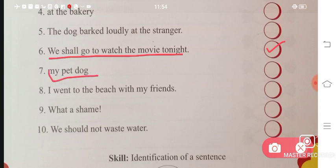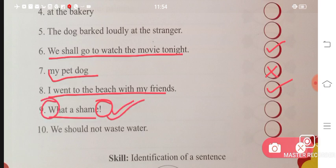'My pet dog' - this is not giving me any sentence or meaning. 'I went to the beach with my friends' - Perfect, it is a sentence. 'What a shame' with exclamation mark, capital letter, has meaning - that means it is a sentence. 'We should not waste water' - It is also a sentence.